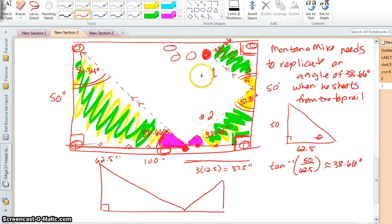We have information from this triangle here. We have a 50 inch side, a 62.5 inch side. Only here is our 38.66 degree angle. And here is our 51.34 degree angle.